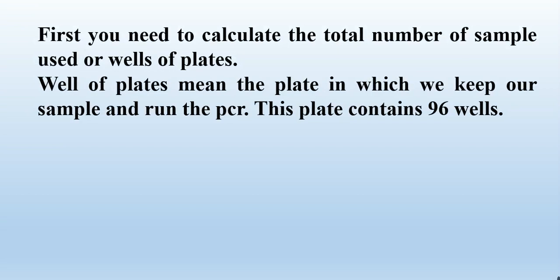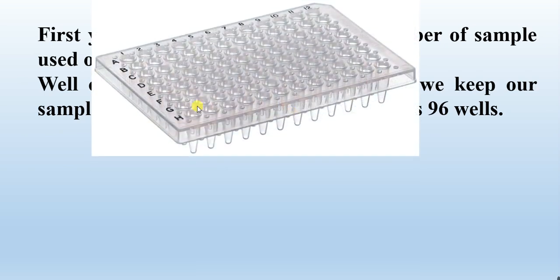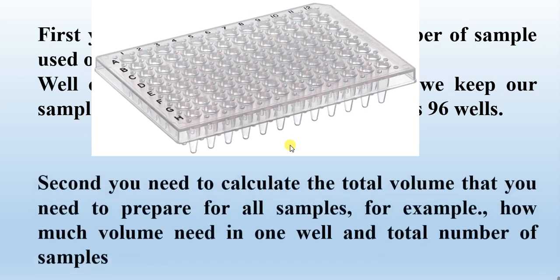First, you need to calculate the total number of wells of the plate. The plate in which we keep our samples for qPCR usually contains 96 wells. It has eight rows named A through H and 12 columns named 1 through 12, giving a total of 96 wells. Second, you need to calculate the total volume you need to prepare for all samples.